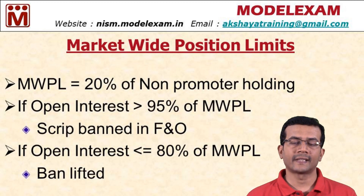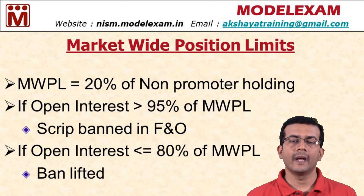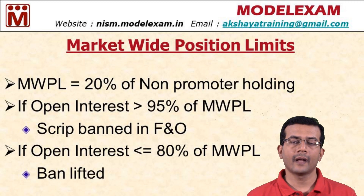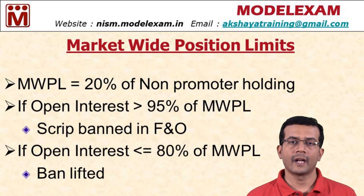Now the second scenario: a trader has already taken a long position and now the stock gets banned. It means he can't take another long position, but he can square it off. Square off means taking the opposite position. Since he has a long position, he can take a short position to square it off.